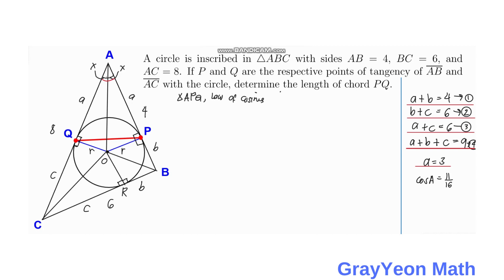To find PQ, we focus on triangle APQ and again use the Law of Cosines. PQ squared equals AP squared plus AQ squared minus 2 times AP times AQ times cosine A. Since AP equals AQ equals 3, we have PQ squared equals 3 squared plus 3 squared minus 2 times 3 times 3 times 11 over 16.